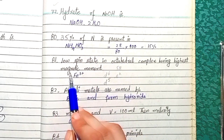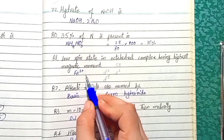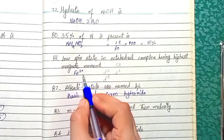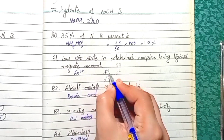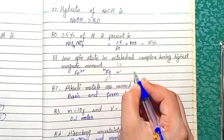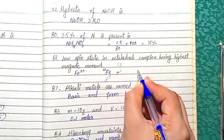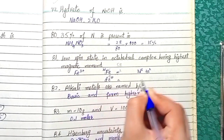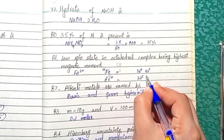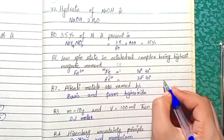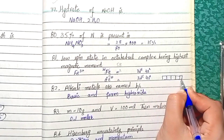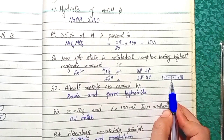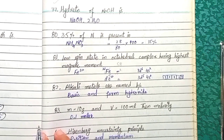Question 81 (additional): In a low-spin octahedral complex with the highest magnetic moment, iron in the +3 oxidation state has the highest spin state because it has the highest number of unpaired electrons. Iron has 26 electrons total with outer electronic configuration 3d⁶4s². In the +3 state, 5 electrons remain in d-orbitals across 5 sub-shells — one electron per sub-shell — giving the highest spin state and therefore the highest magnetic moment.